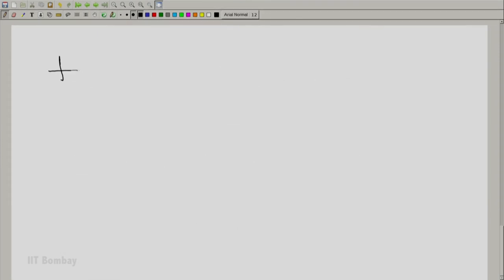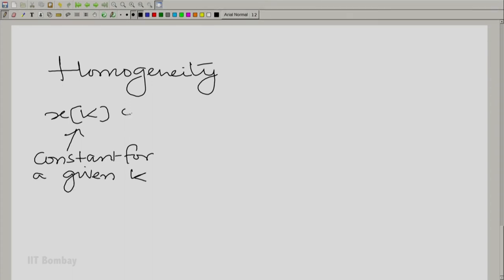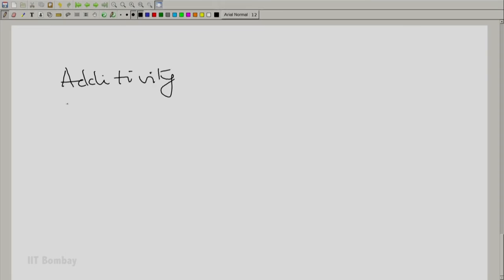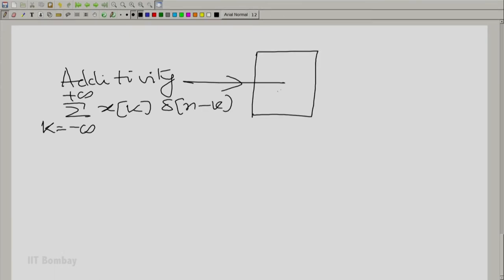Let S be a linear shift invariance system. You know that delta n minus k is going to produce h n minus k as a consequence of shift invariance. Let us invoke the properties one by one. Let us now invoke the property of homogeneity. That tells me that if I multiply, remember for a given k, x of k is a constant. If I multiply delta n minus k by x of k and give it to the same system, I expect the output to be x of k times h of n minus k. Finally, I invoke the property of additivity. That tells me that when I add overall k, k going from minus to plus infinity, x of k delta n minus k, actually the same thing should happen at the output. I should get summation k going from minus to plus infinity, x of k h of n minus k.